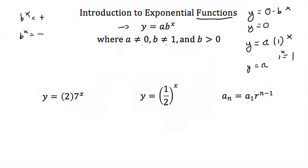Here are some examples of exponential functions. We have y equal to two times seven to the x — this is an exponential function because the variable is in the exponent. We also have y equal to one half to the x. Again the variable is in the exponent. There's no explicit a term, but you can think of it as being multiplied by one, making a equal to one.